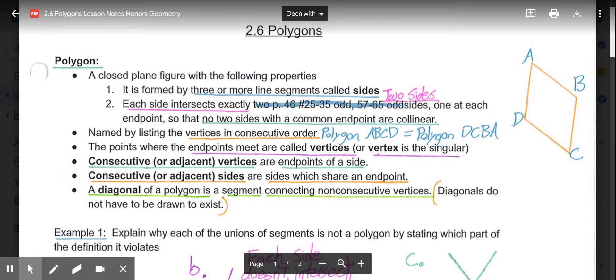Consecutive or adjacent sides are sides that share an endpoint. So side AD would be consecutive to side AB and side DC. And then, a diagonal. A diagonal of a polygon is a segment connecting two non-consecutive vertices. So it's connecting two vertices that are non-consecutive. And diagonals do not have to be drawn to exist. A diagonal would exist from A to C, and from B to D, because they are non-consecutive vertices.